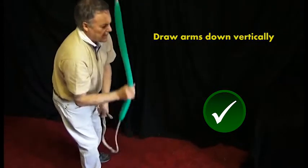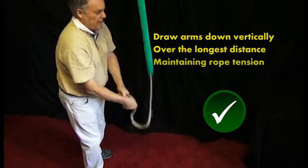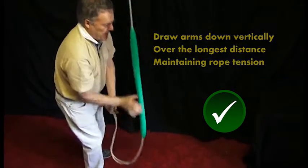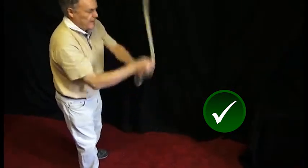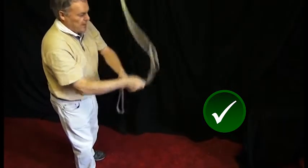You'll do this by drawing your hands and arms down firmly over the longest possible distance, keeping tension in the rope all the time. The greater the distance, the more energy you will transfer to the bell, and the faster it will go up.